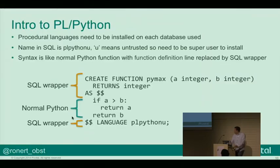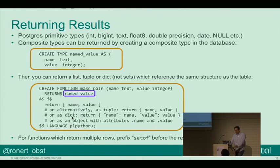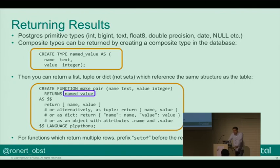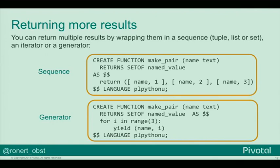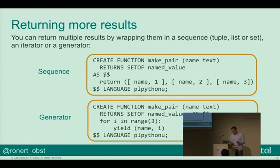If we want to return multiple results, we can do this by creating a composite type using the create type statement. In this case, we create a named value — it's just a tuple of a name and a value. Within our Python code we can return a tuple, a dict, or a list, and then the database knows how to put those into individual rows. If we actually want to return multiple rows, we can use the set-of notation: create function make_pair, return set of name_value. It fills multiple rows in your database in addition to multiple columns.